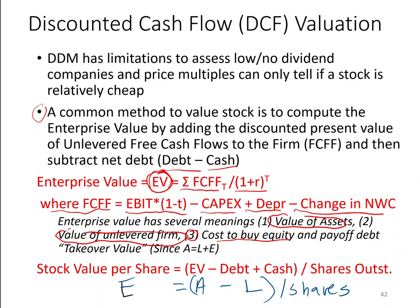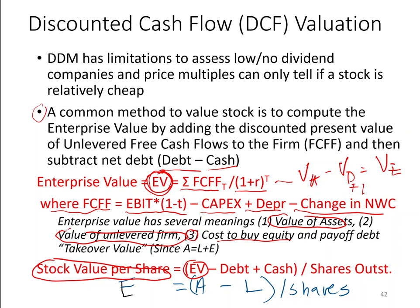To value the equity, or just the stock: if EV is the value of assets and you subtract off the value of debt and liabilities, you get the value of equity. Stock valuation per share = (present value of FCFFs) minus debt — all interest-bearing liabilities — plus cash if cash is not needed for operations. That net debt is debt minus cash, divided by number of shares.